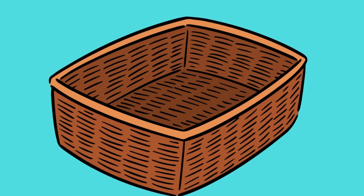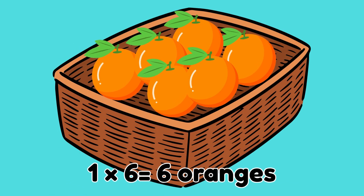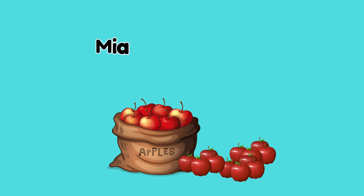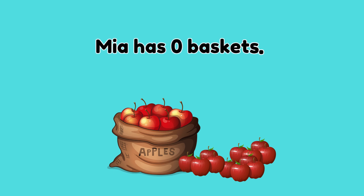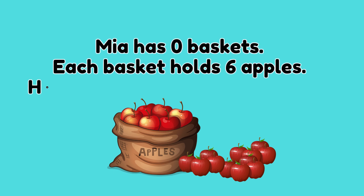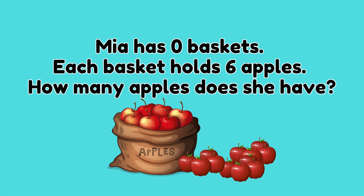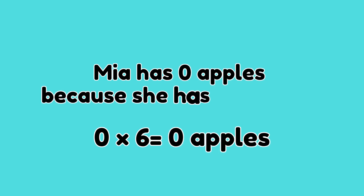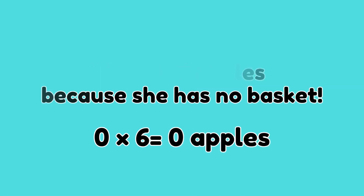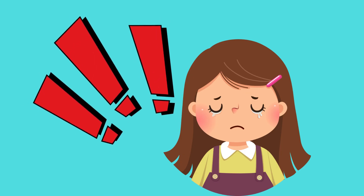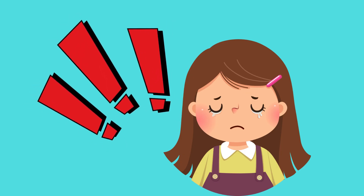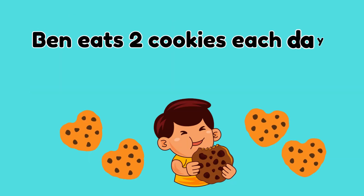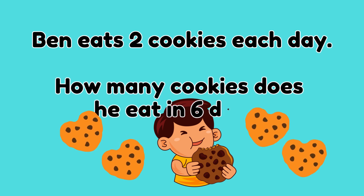One times six is equal to six — six oranges! Mia has zero baskets. Each basket holds six apples. How many apples does she have? Mia has zero apples because she has no basket. Zero times six is equal to zero — no apples for Mia!